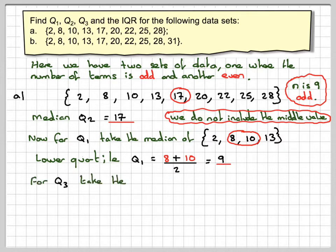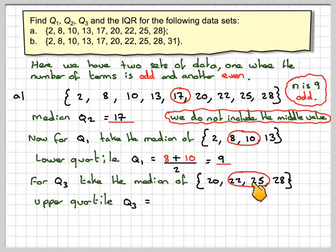For the upper quartile, then you just take these set of numbers when n is odd. So 20, 22, 25, 28. And the upper quartile Q3 will be the median mean of these two sets of data here. So 22 plus 25, which is 23.5.